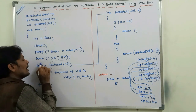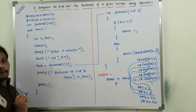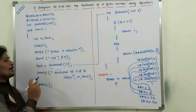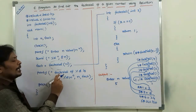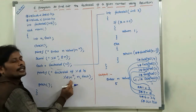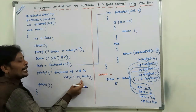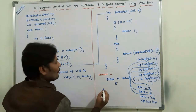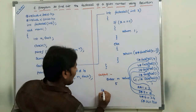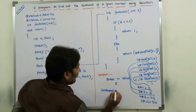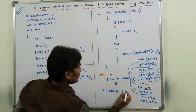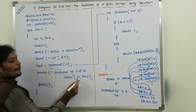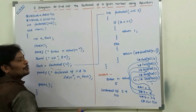This 120 can be assigned to the variable on the left-hand side, that is fact. Now fact contains 120. So printf("factorial of %d is %d\n", n, fact) — n value is 5, fact value is 120. What we are getting: "factorial of 5 is 120" is printed. In the place of n, 5 is printed; in the place of fact, 120 is printed. After that, the program is terminated.